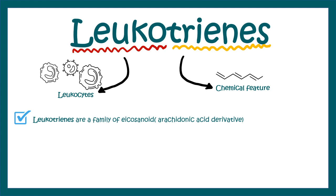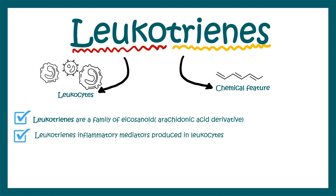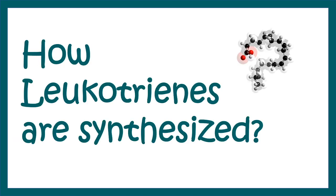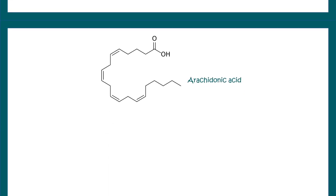Leukotrienes are actually a family of eicosanoids and are arachidonic acid derivatives. Leukotrienes are inflammatory mediators, just like other arachidonic acid derivatives such as prostaglandins. Now let's talk about how leukotrienes are synthesized in our body.